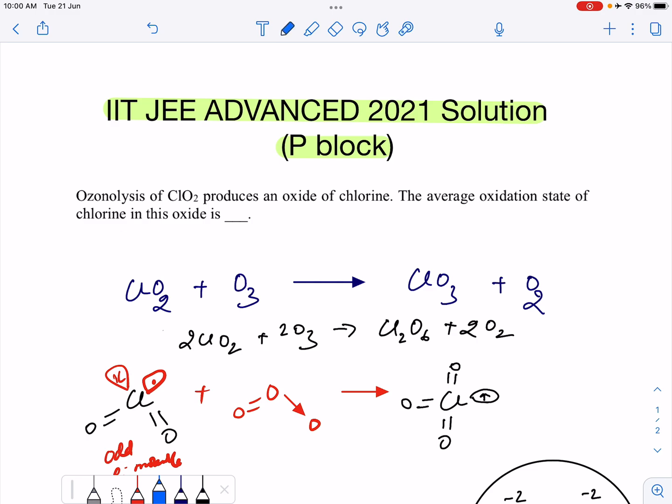So the answer to this question, the average oxidation state of chlorine in this oxide, the answer must be plus 6. Hope you like the approach of the question and thanks for your valuable time.